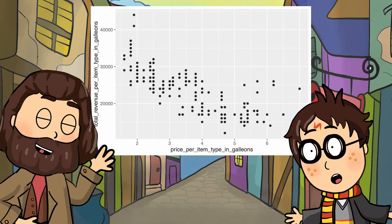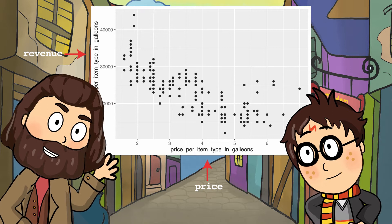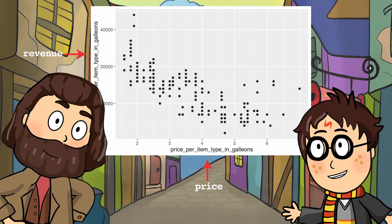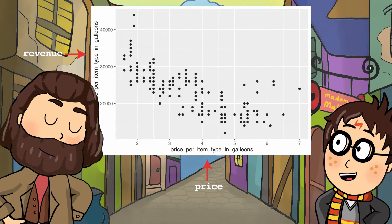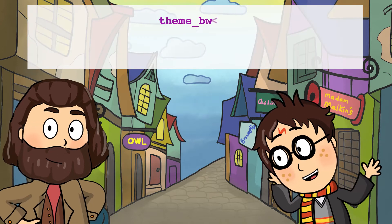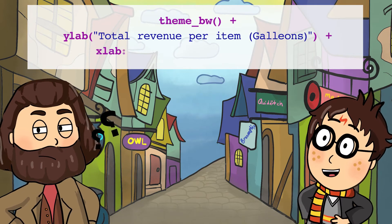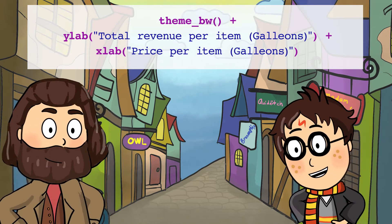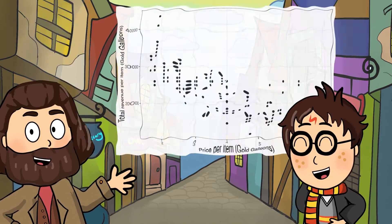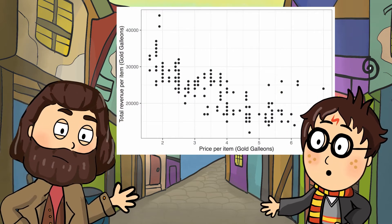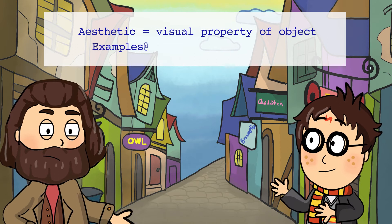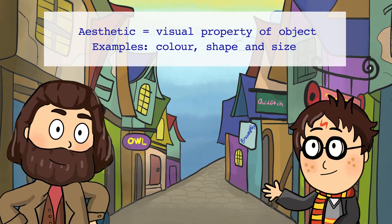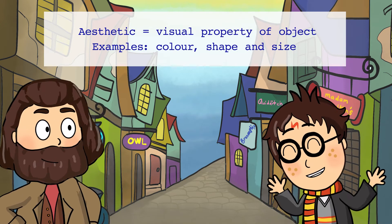Based on this plot, it looks like if the price for an item is cheaper, the total revenue per item type is higher. Interesting! That could be because cheaper items are more affordable and therefore sell better. We can use the theme_bw function to create a clean-looking graph, and the xlab and ylab functions to modify the X and Y axis labels. Looking better! But what do these points refer to? We can use aesthetics to add color to the points to represent each shop. Aesthetics is a visual property of the objects in a plot — it can include color, shape, and the size of the points.